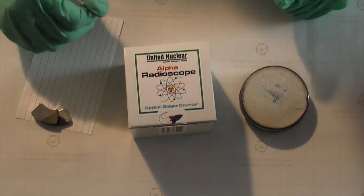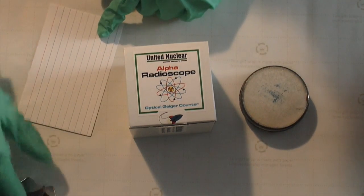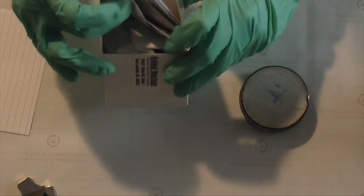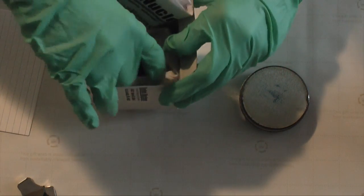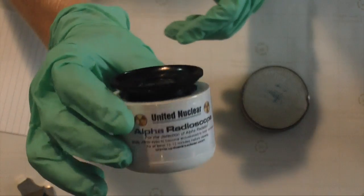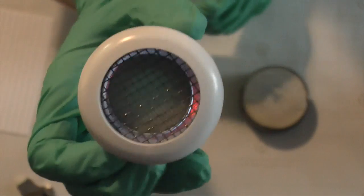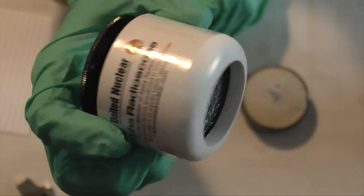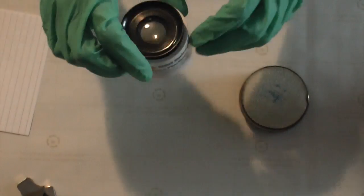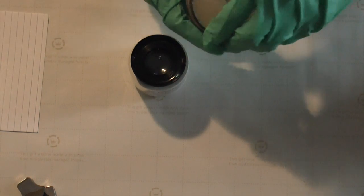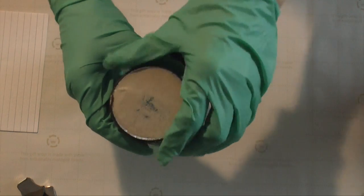All right, got our gloves on, ready to play with some science. First thing we do is unpackage this radioscope. Now this is essentially a magnifying glass with a zinc sulfide screen attached at the bottom. This zinc sulfide screen, when excited by alpha radiation, gives off little flashes of light, or scintillations as they're sometimes called. This is what we'll be using to see the alpha radiation.